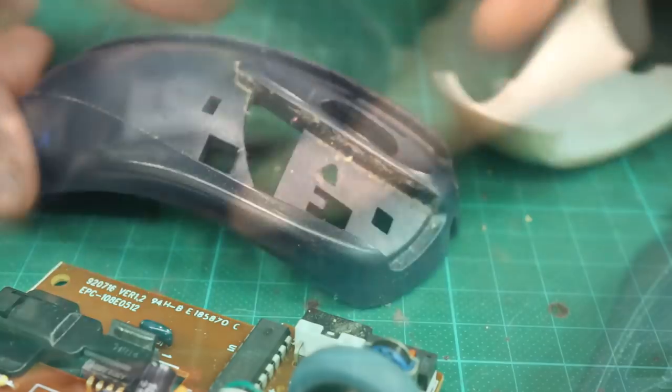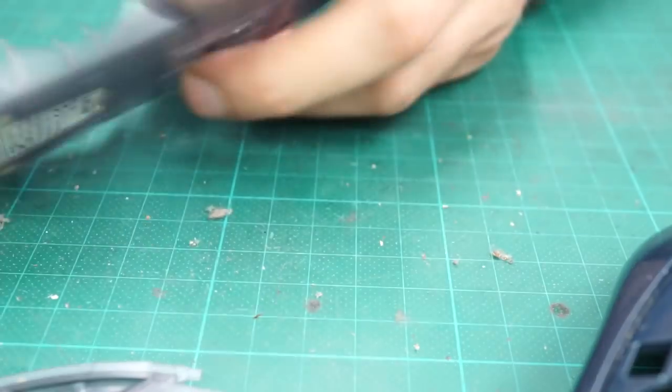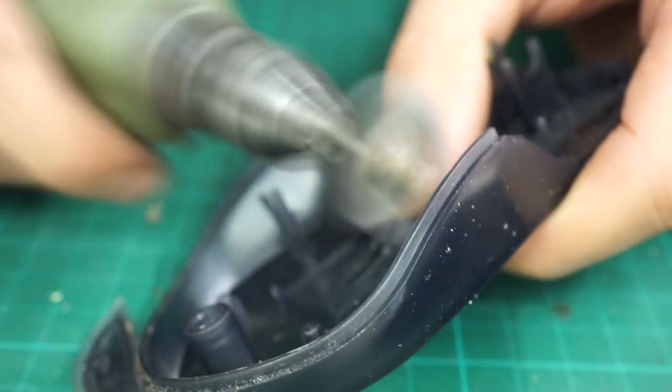When the housing is disassembled I start cleaning piece by piece. First I clean them with a toothbrush and compressed air, then continue with a brush and alcohol.